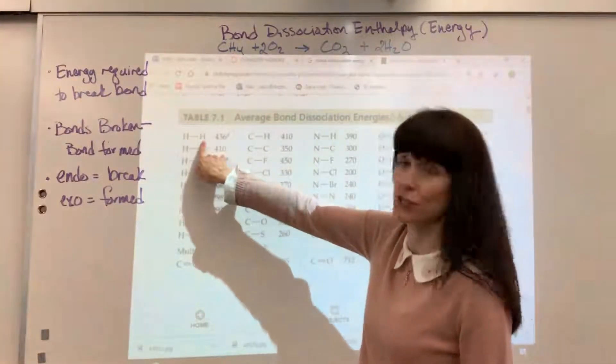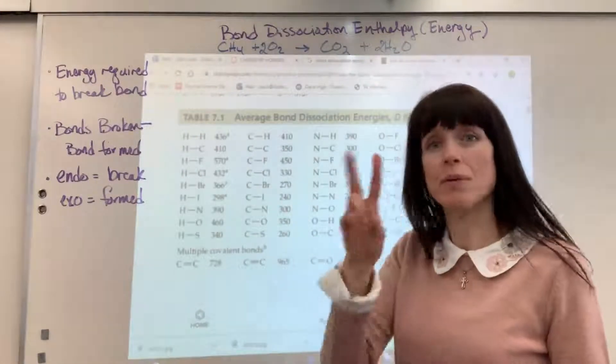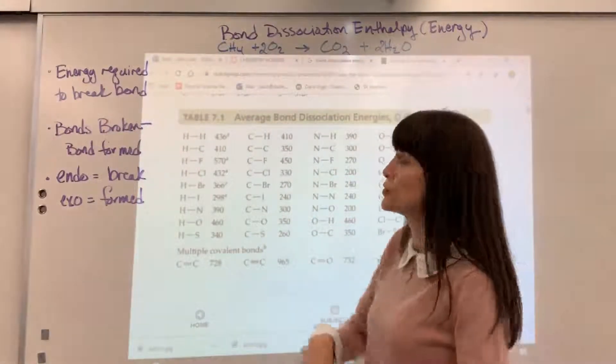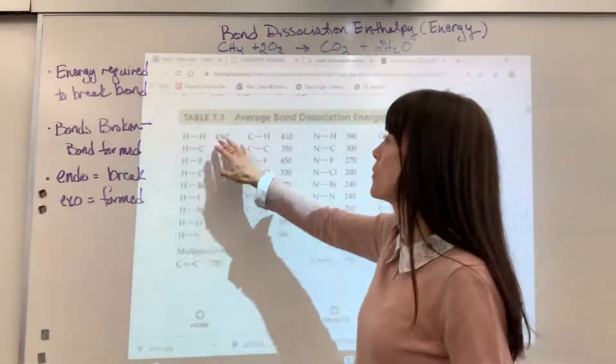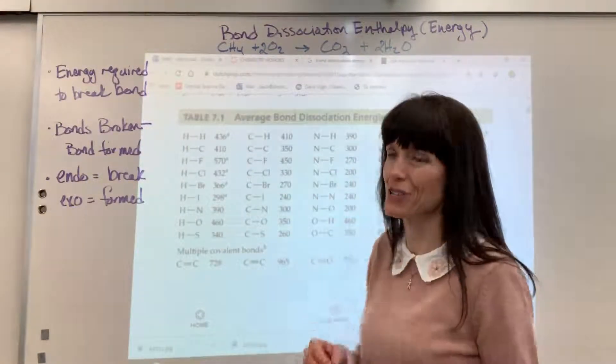If you see the hydrogen-hydrogen, that is a hydrogen bond, one bond between two hydrogens. To break that, it's going to take 436 kilojoules, and that will be kilojoules per mole of hydrogen bonds.